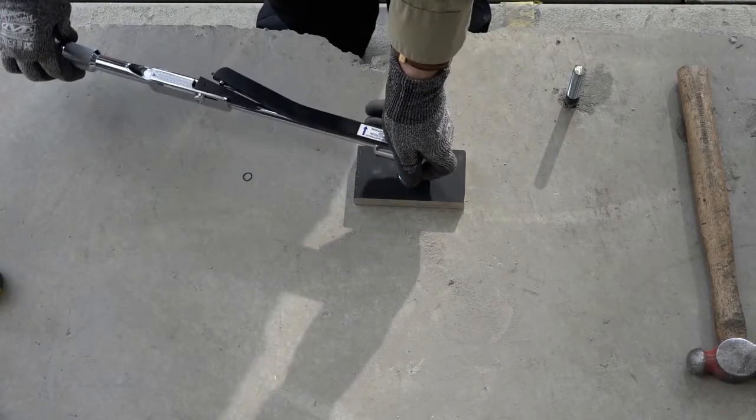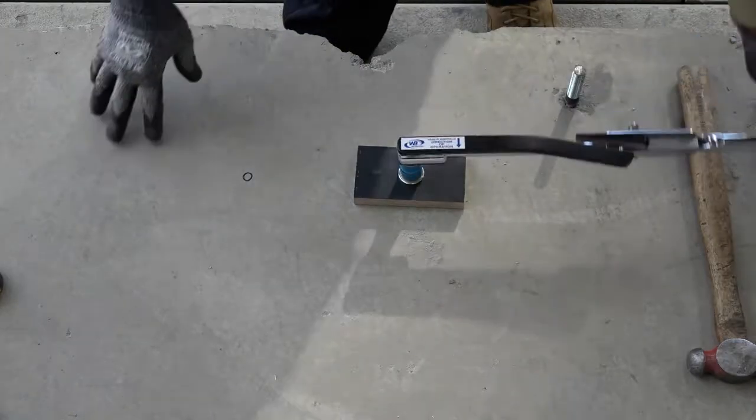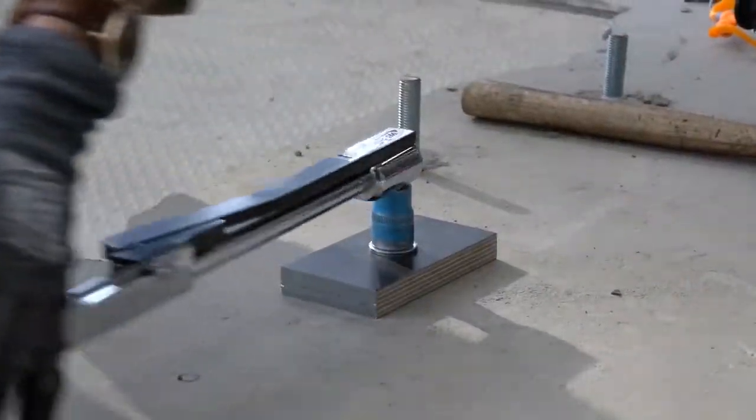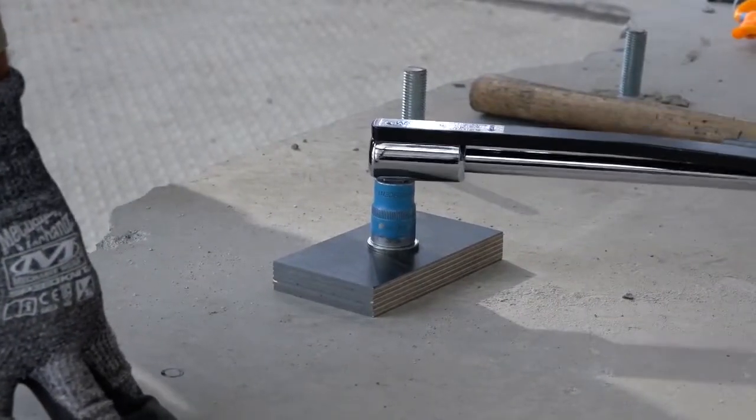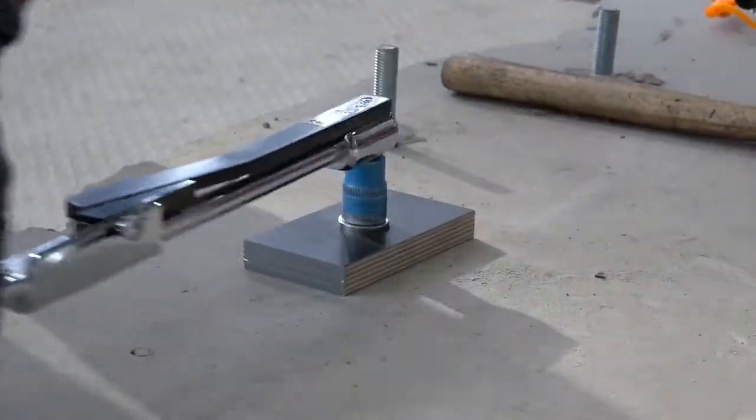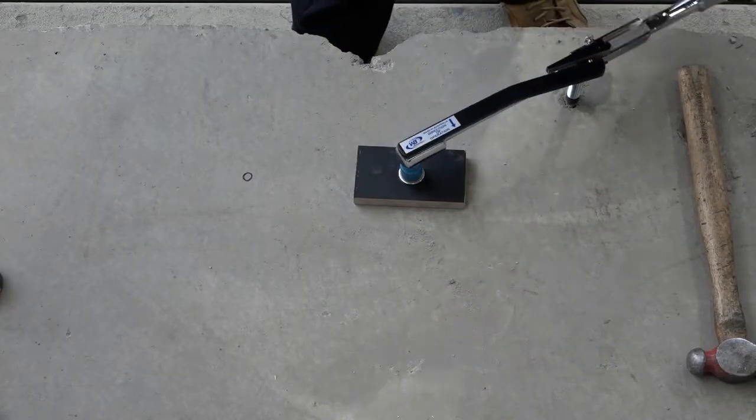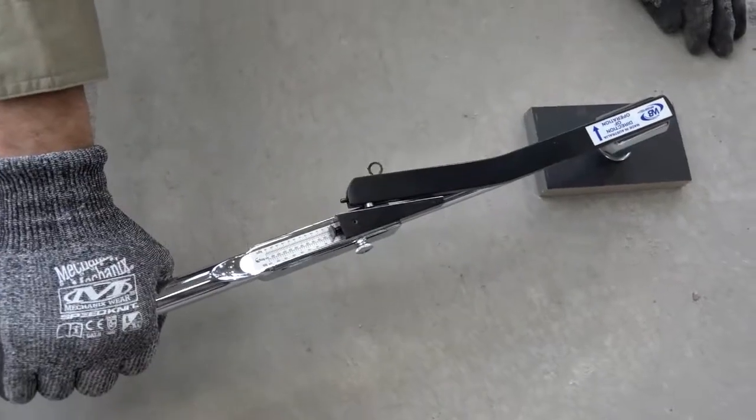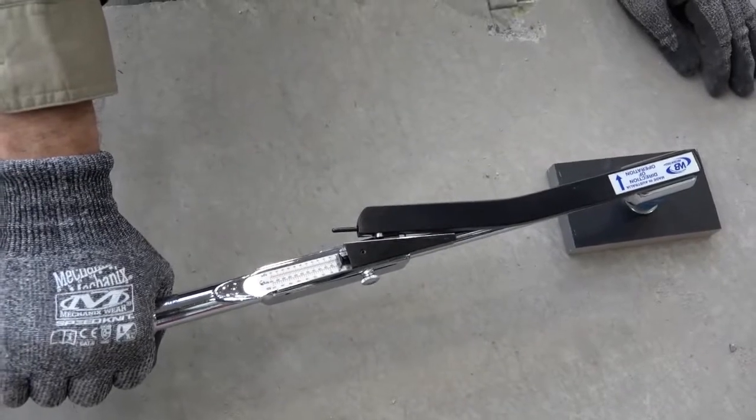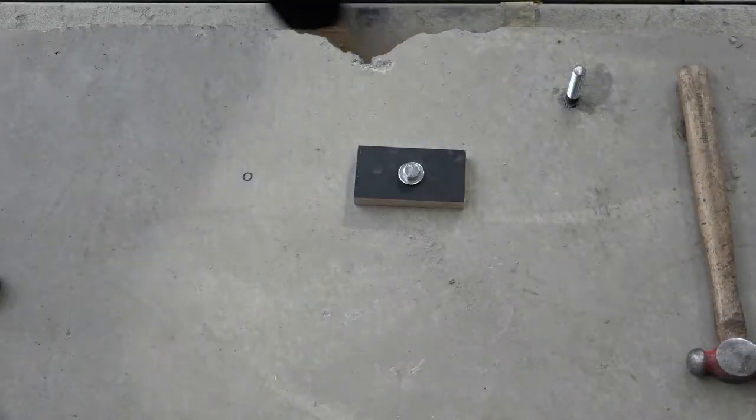Now, apply torque to the anchor in smooth sweeping rotations until the peak torque is indicated. I feel the torque coming on now. And there's the indication. The anchor is now correctly set.